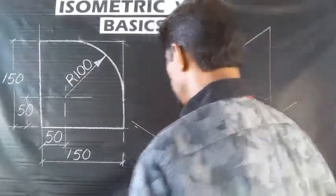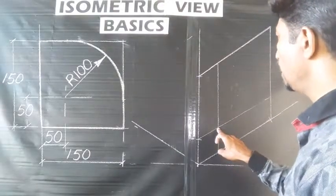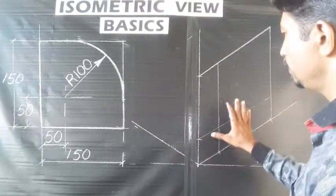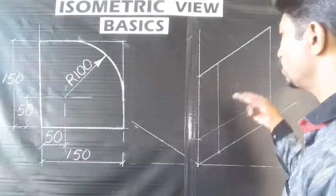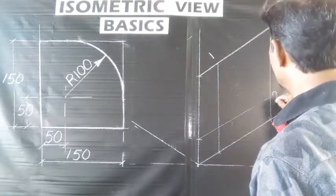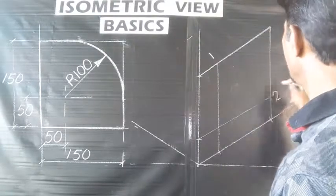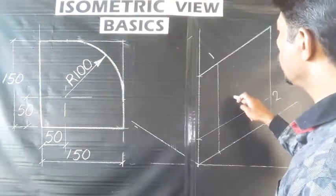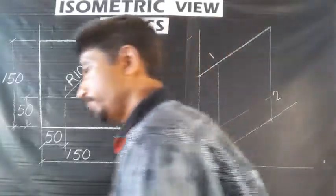This is the center of the arc. The arc has a starting point and an ending point, and the arc will proceed from start to end. In the isometric view, the arc will be close. Now it is the center of the arc. We can see how the arc is positioned.